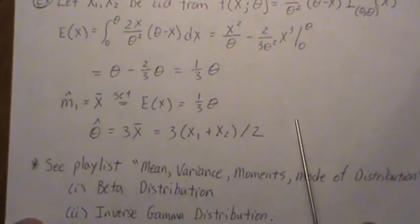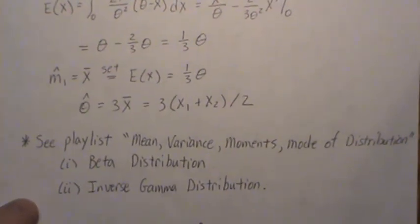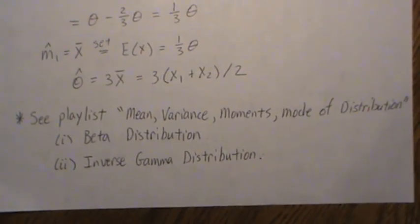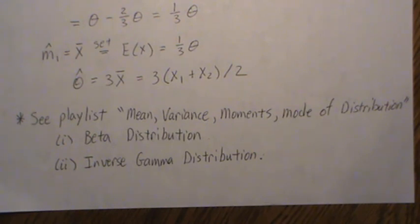I have a playlist called Mean, Variance, Moments, Mode of Distributions where I calculate different estimates—the mean, the variance, etc. I have two videos where I calculate the method of moments for the beta distribution and an inverse gamma if you want more examples. I'll probably add more examples to this playlist as we go. That's all I have for this video. Hopefully you enjoyed it. I sure did. Please like the video and subscribe so you don't miss the next one. Thanks, bye!